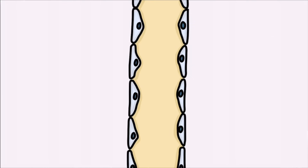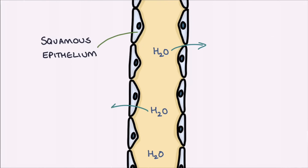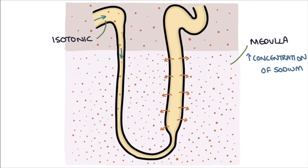The descending loop has squamous cells lining its wall, and these are very permeable to water. So water flows by osmosis from the area of low solute concentration in the filtrate to the area of high solute concentration in the interstitial fluid of the medulla. This results in the filtrate becoming more concentrated as it loses water going down the descending loop, then becoming less concentrated as it loses sodium, potassium, and chloride, which are pumped out in the ascending loop.